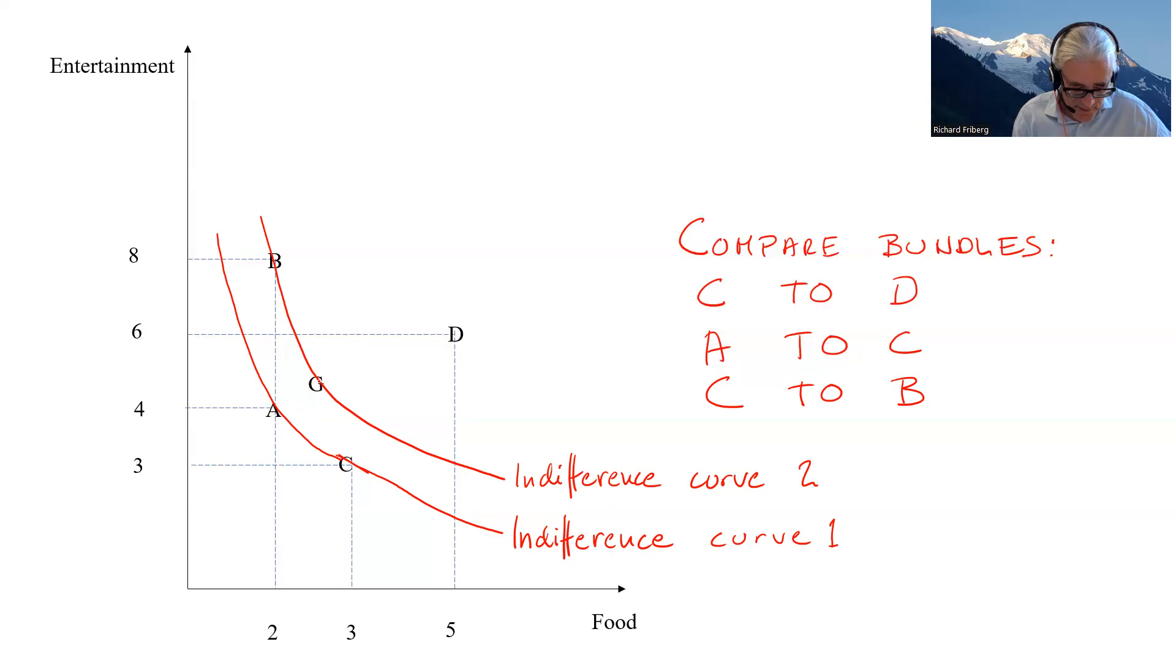We know that G is preferred to A. Why? Because more is better. G contains more of both goods, more of all goods, than what A does. So it should be preferred. And B, the consumer is indifferent between B and G. Okay, so with that chain, we can say, well, from that, we can deduce that B is preferred to C. Okay?